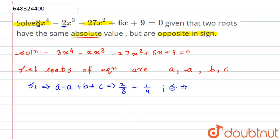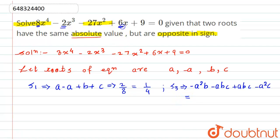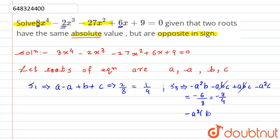Now we define S3, the third symmetric sum: minus a² times b minus ab times c plus abc minus a²c. This equals minus d divided by a, which is minus 6 divided by 8, giving minus 3 by 4. Simplifying, the terms cancel and taking minus a² as common, we get b plus c equals minus 3 by 4. So a² times (b plus c) equals 3 by 4. Let this be equation number 2.